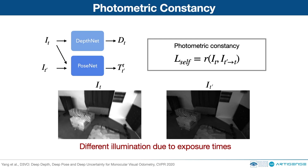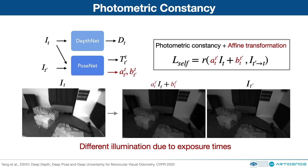Photometric constancy is the core of self-supervised monocular depth estimation networks. However, the assumption is sometimes violated due to different illuminations. We therefore propose to align the illumination conditions of the source and target images and then calculate the photometric residual. To realize it, we let the network predict the affine lighting transformation parameters A and B from PoseNet, and apply the affine transformation on the intensities of the target image. Note that the two parameters are learned self-supervisedly without the need of ground-truth labels.